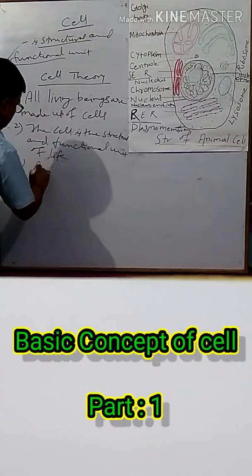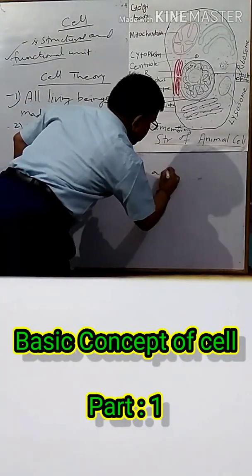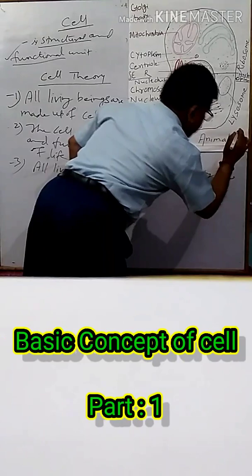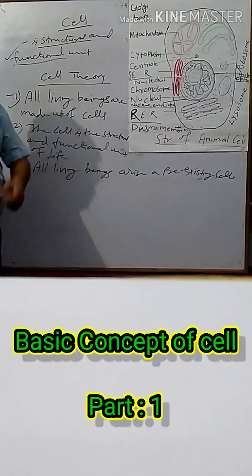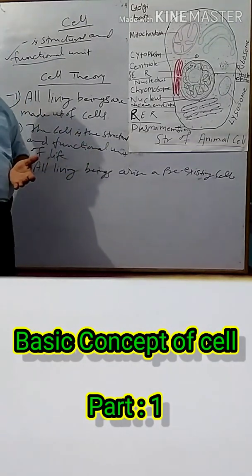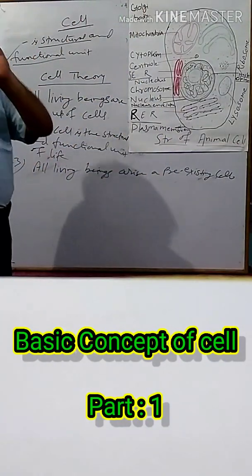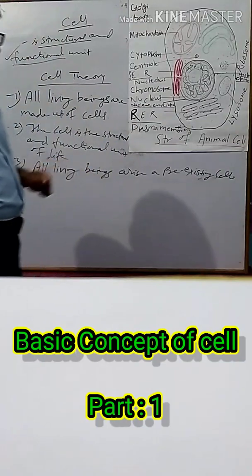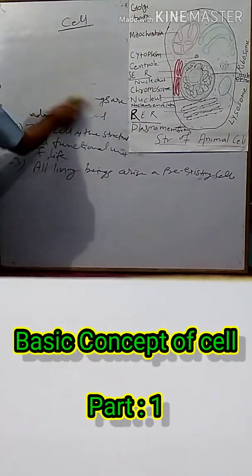Point three: all living beings arise from pre-existing cells. This means each and every offspring is made up by parent gametes. So this is the cell theory. The next topic is the structure of the cell.